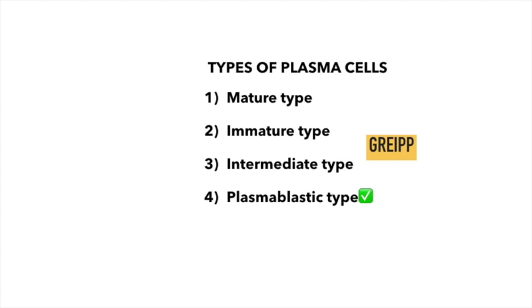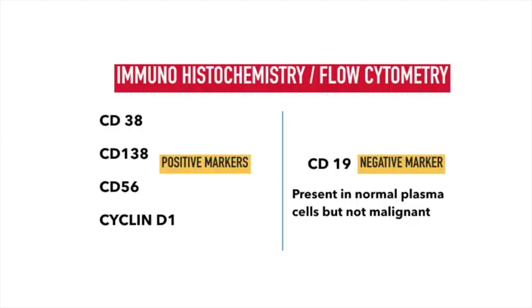You may have difficulty recognizing plasmablastic cells and would want to use immunohistochemistry markers. It is also important that the presence of plasmablasts confers a very bad prognosis. The immunohistochemistry markers that are positive in a case of multiple myeloma are CD38, CD138, CD56, and cyclin D1. CD19 is a B-cell marker and plasma cells originate from B cells, but CD19 is only positive in normal benign plasma cells. In multiple myeloma or malignant plasma cells, the CD19 marker is negative.